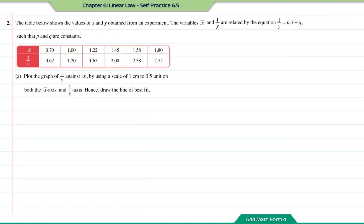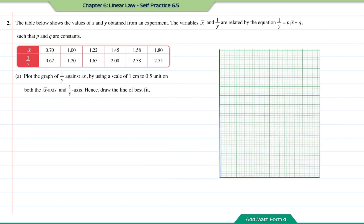Questions number 2. The table below shows values of x and y obtained from an experiment. The variables square root of x and 1 over y are related by the equation 1 over y equals p times square root x plus q, such that p and q are constants. Part A: plot the graph of 1 over y against square root of x using a scale of 1 cm to 0.5 unit on both axes. Hence, draw the line of best fit. Let us first draw the scale, then transfer the data from the table onto the graph, and draw the line of best fit.